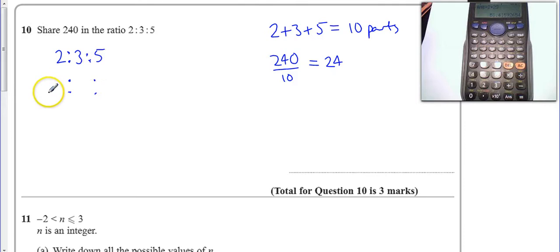I know that 2 times 24 is 48, I know 3 times 24 is 72, and I know 5 times 24 is 120. You can check those on your calculator.